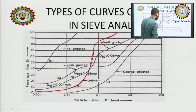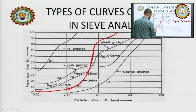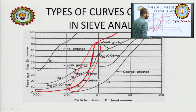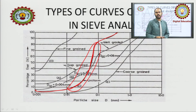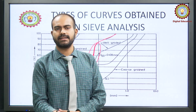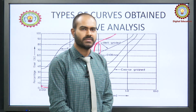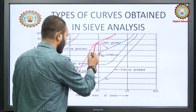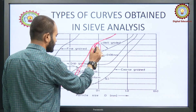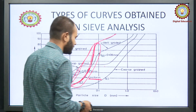Why is it called uniform? Because you can see the range is very low. Most of the particles lie in just this one region, meaning most particles are of nearly the same size. Near-same-sized particles means the soil is uniform — the particle sizes that constitute that soil are nearly all the same size. You can see how steep the curve is, and due to this steepness it is called uniform.